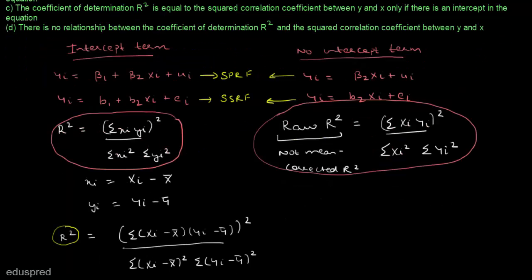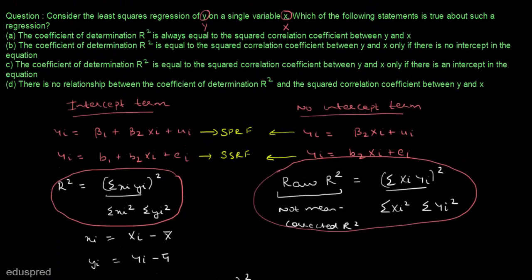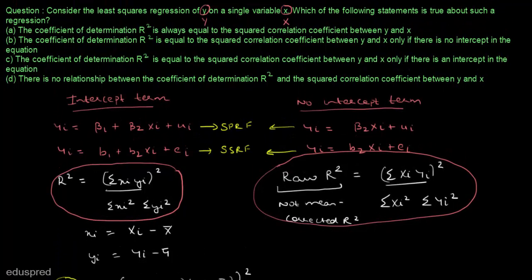With all this information, let's see which of the following statements is true. Statement a says the coefficient of determination r-square is always equal to the squared correlation coefficient between y and x. This statement is false, because r-square equals the squared correlation coefficient only when we have an intercept term in the model. When there is no intercept, we use raw r-square, which is not equal to correlation squared. So statement a is false.